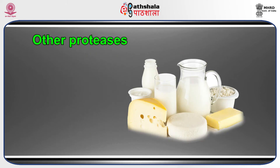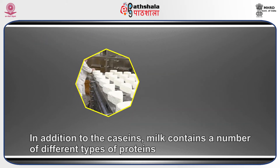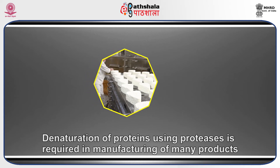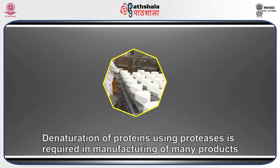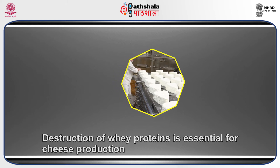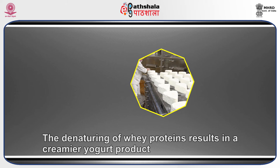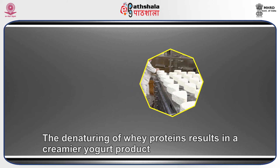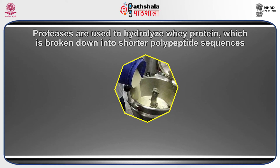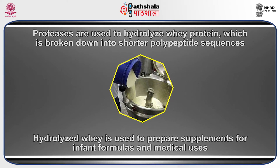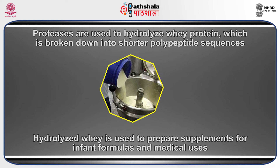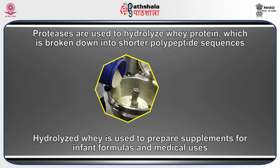In addition to caseins, milk contains a number of different proteins. Denaturation of proteins using proteases is required in manufacturing of many products. For instance, destruction of whey protein is essential for cheese production, and the denaturing of whey proteins results in a creamier yogurt product. Proteases are used to hydrolyze whey protein, breaking it down into shorter polypeptide sequences. This hydrolyzed whey is used to prepare supplements for infant formulas and medical uses, as it is less likely to cause allergic reactions.